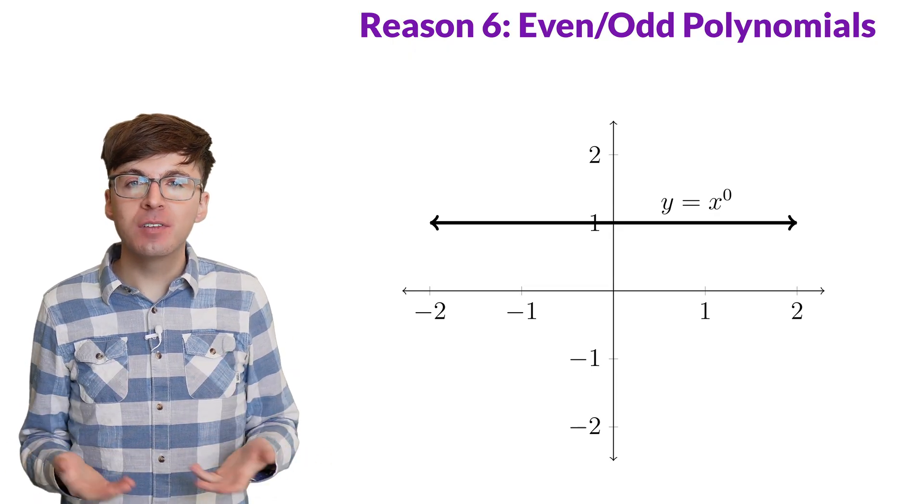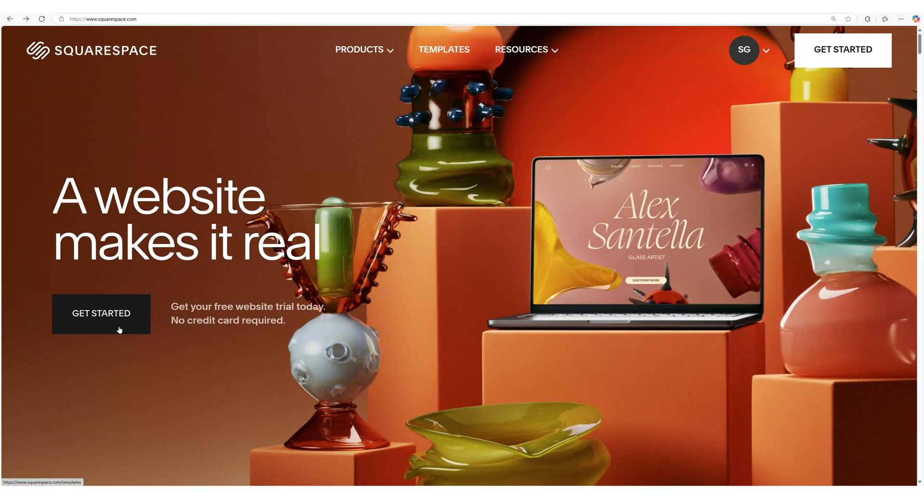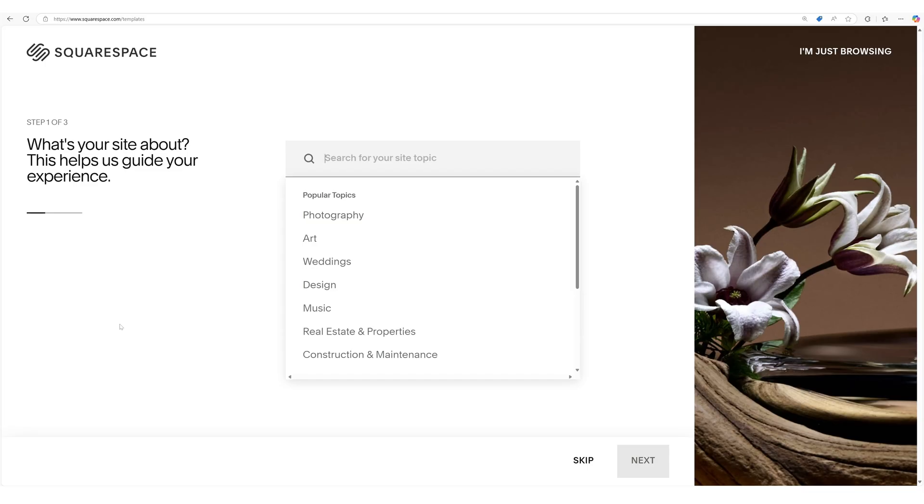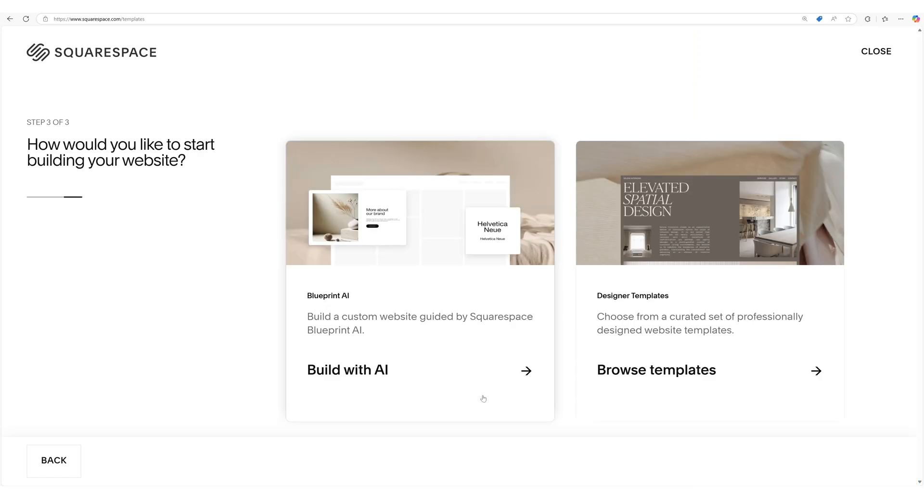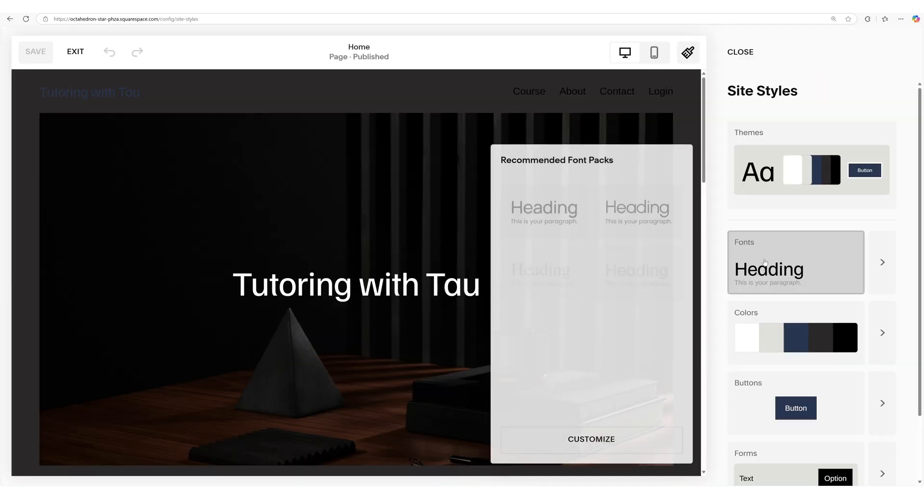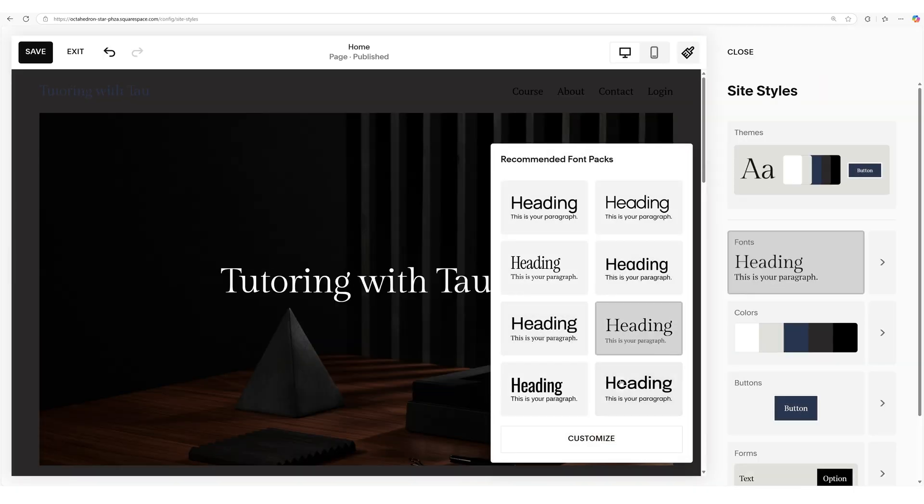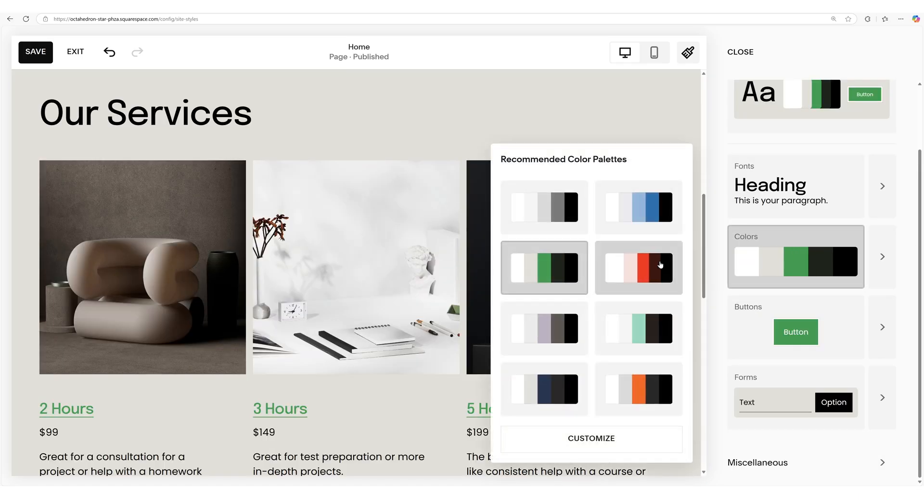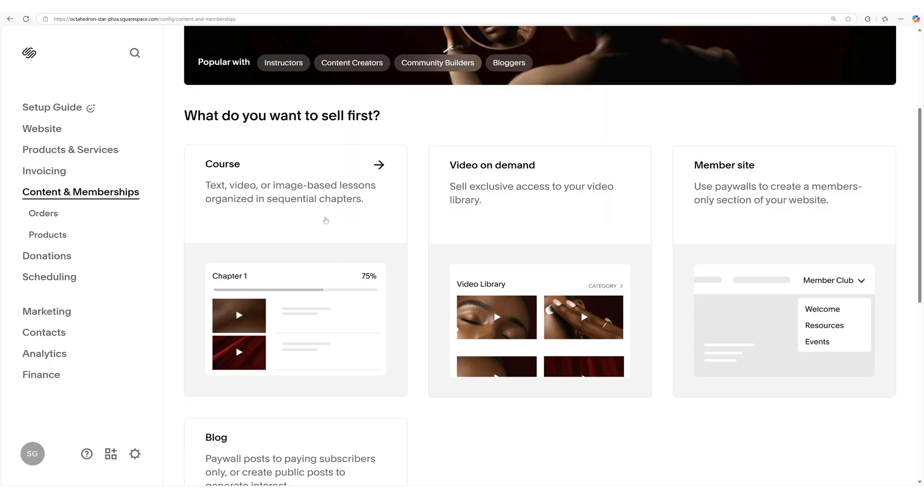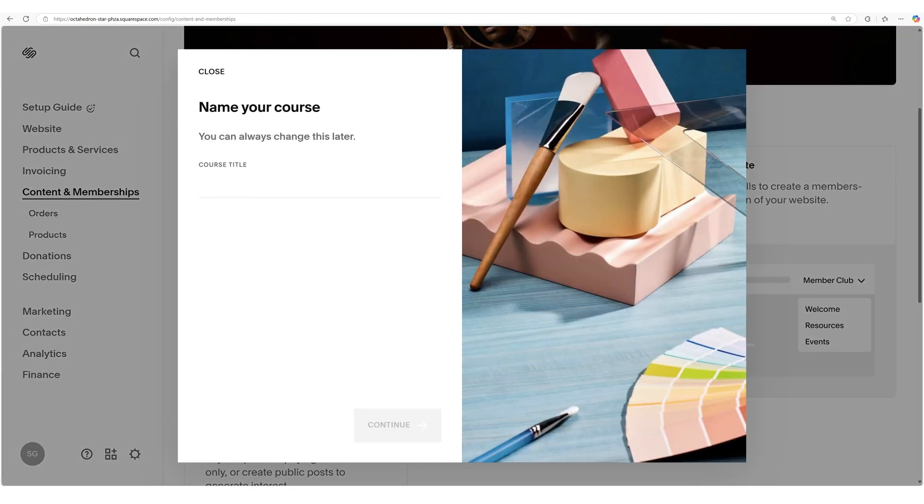Just like 0 being even simplifies math, Squarespace simplifies building your own custom website. Squarespace's new design intelligence combines their decades of design expertise with powerful new AI tools, so anyone can build a beautiful custom website fast. You can even publish online courses. Choose your layout and upload your videos. You can easily add a paywall and set your price. Getting started with Squarespace payments takes just a few clicks, so you'll be able to accept payments right away.